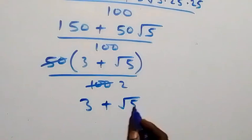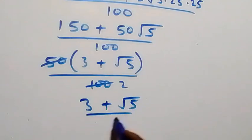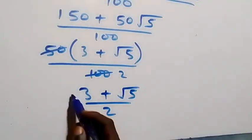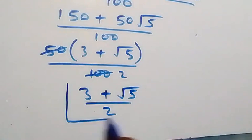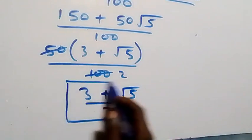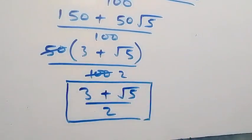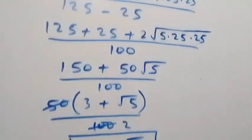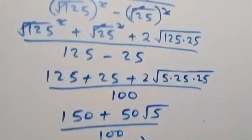50 over 100 simplifies to 1 over 2, which gives us (3 plus root 5) over 2 — the same answer as in the first method. Thank you for watching, don't forget to subscribe for more exciting videos, turn the notification bell on, see you next class!